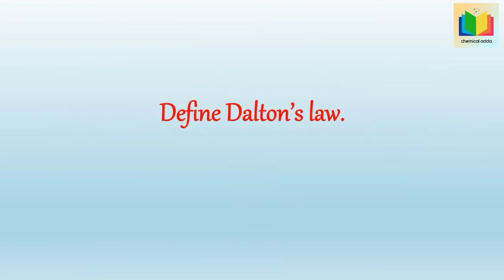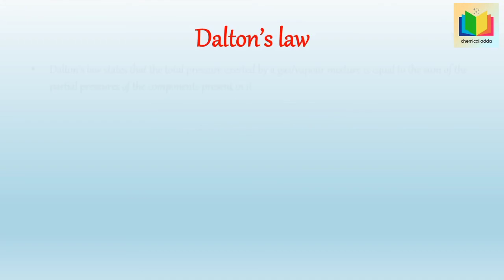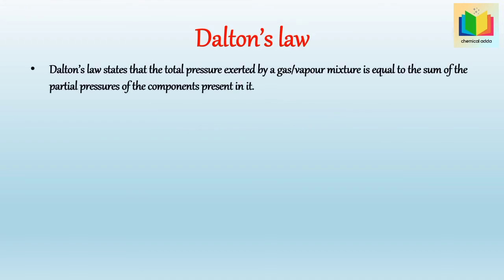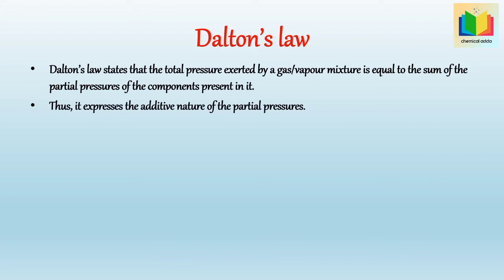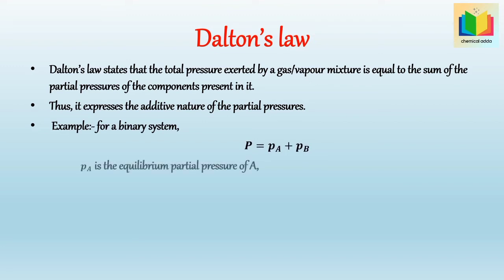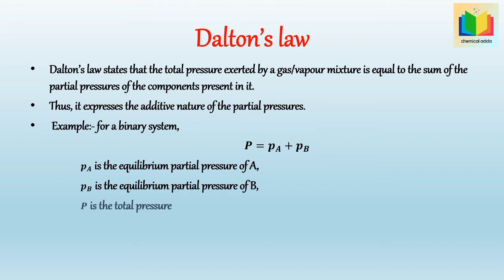Define Dalton's law. Dalton's law states that the total pressure exerted by a gas or vapor mixture is equal to the sum of the partial pressures of the components present in it — it expresses the additive nature of partial pressures. For a binary system: P = pA + pB, where pA is the equilibrium partial pressure of A, pB is the equilibrium partial pressure of B, and P is the total pressure.